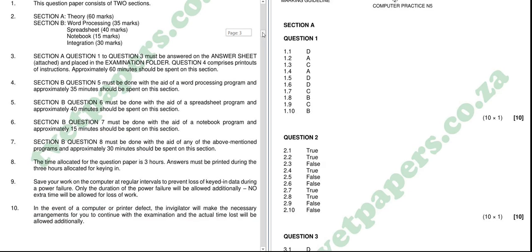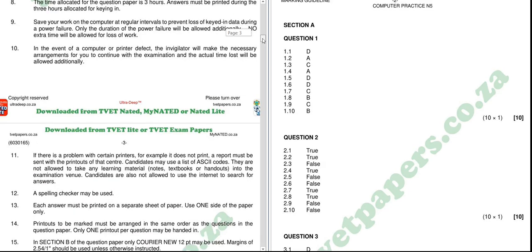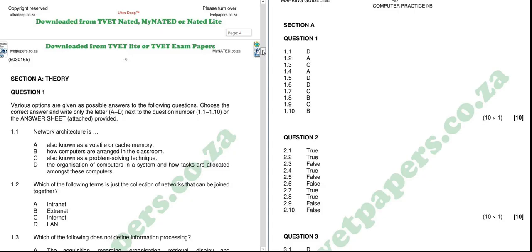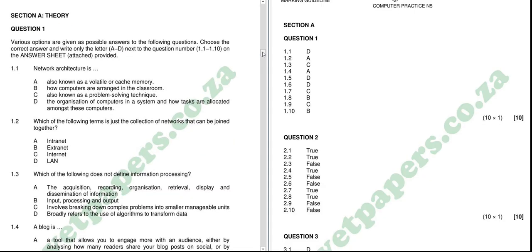If we go to the first part of the question paper, we see that it's going to be the multiple choice section. In terms of the first question, we have: 'A network architecture is...' — the expected response is D: the organization of computers in a system and how tasks are allocated amongst these computers. The second question: 'Which of the following terms is just a collection of networks that can be joined together?' — A, intranet, is the correct response.